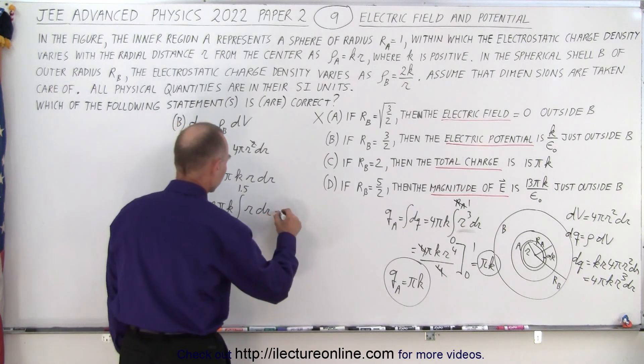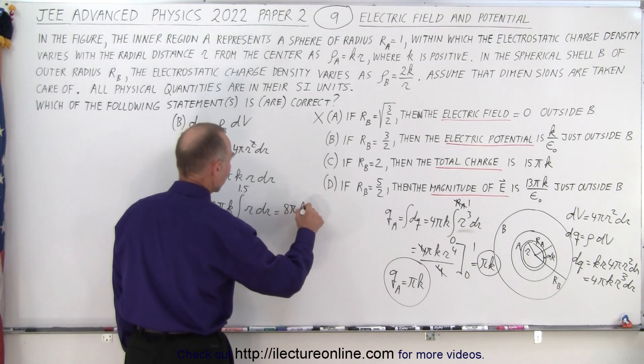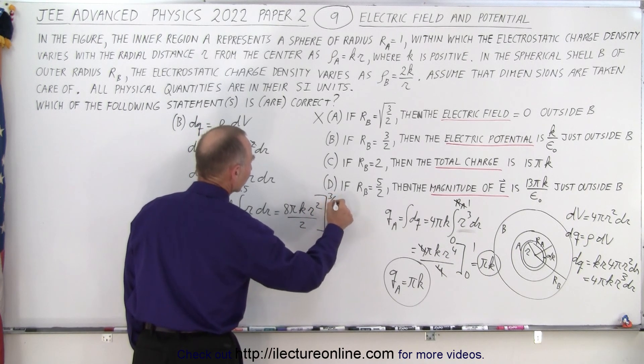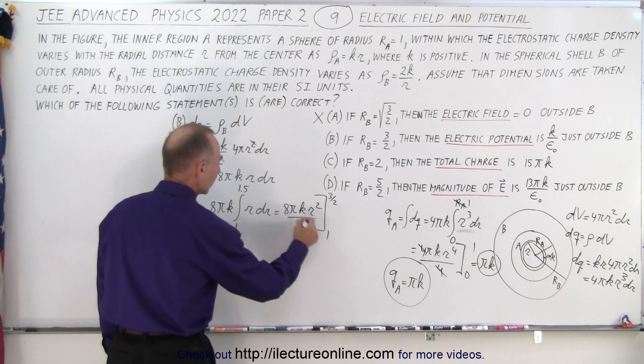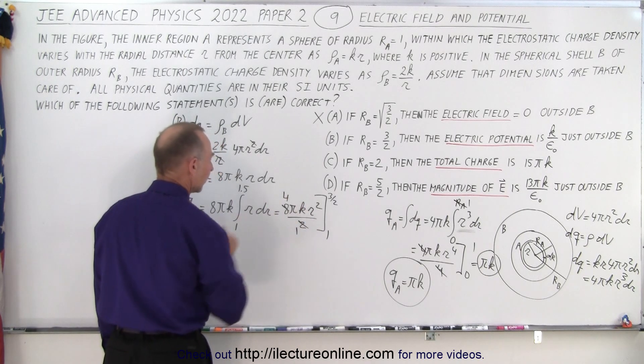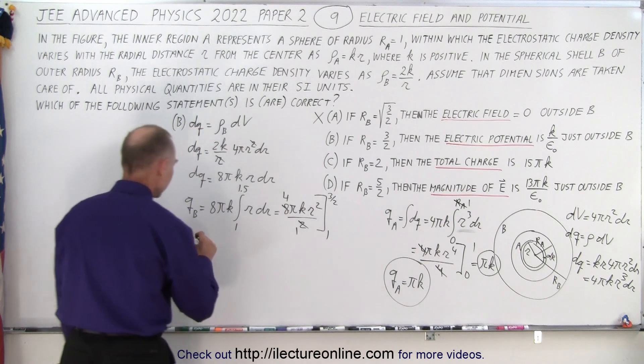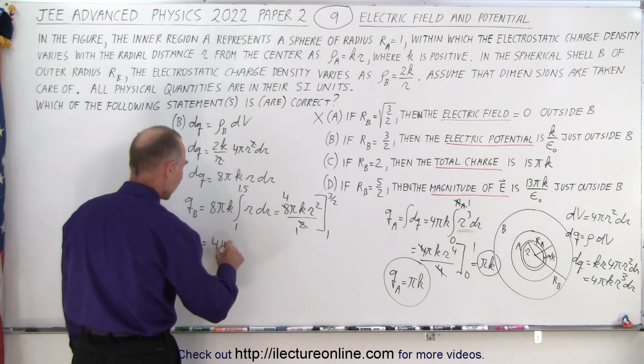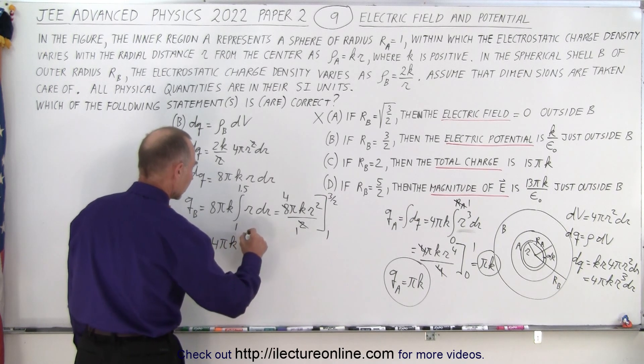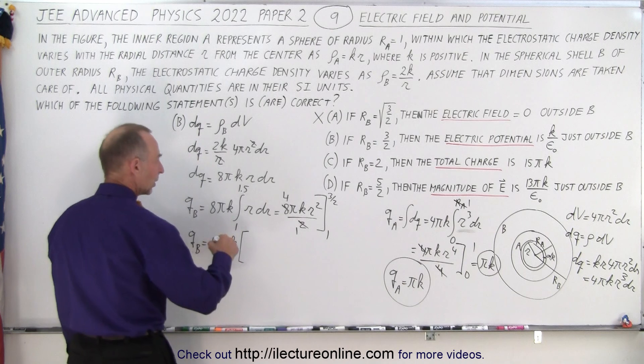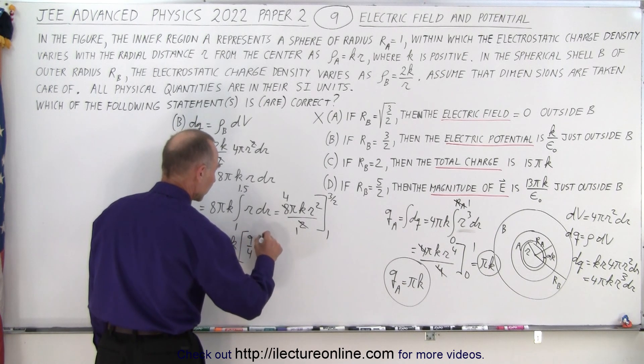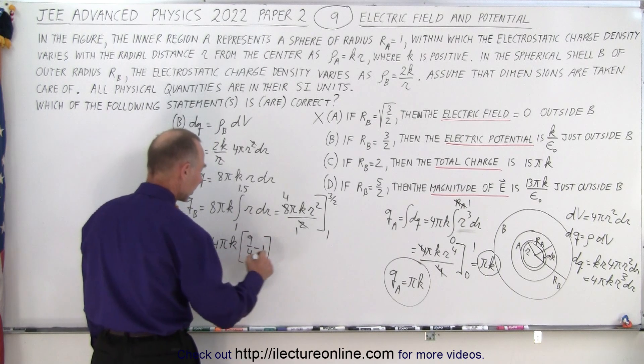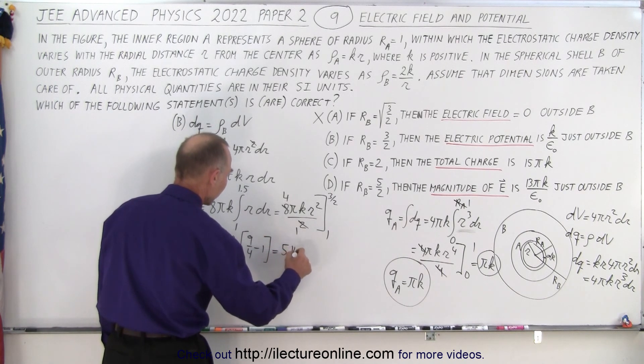Alright, so this is equal to 8 pi k, r squared over 2, evaluated from 1 to 3 halves. So the 2 and the 8 cancel to 1 and 4, so that is equal to q sub B is equal to 4 pi k times, plug in the upper limit, I get 9 over 4, plug in the lower limit, I get 1, which is 4 over 4, so that gives me 5 over 4, and the fours will cancel out, so this gives me 5 pi k.